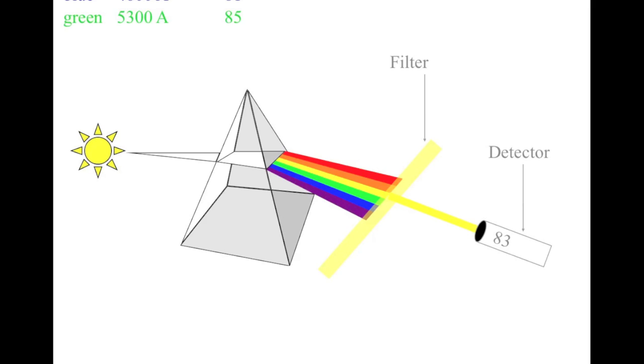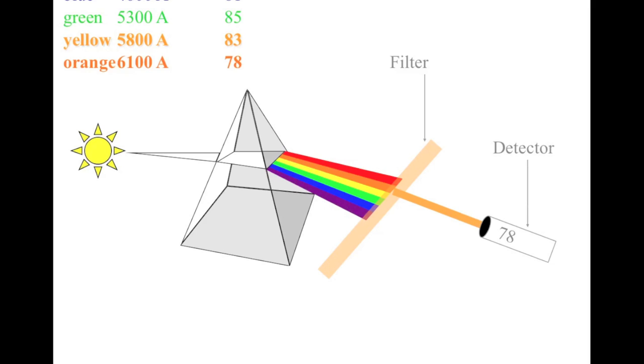Then I switch over to a yellow filter and count 83 photons in one minute. Then I switch over to an orange filter and I count 78 photons in one minute. Finally, I use a red filter and count 70 photons. I've noted all this down in a table so that I can see that different colors give me different numbers of photons from this particular star.